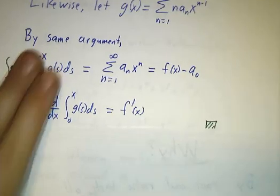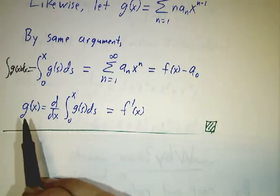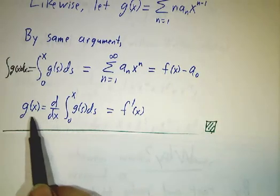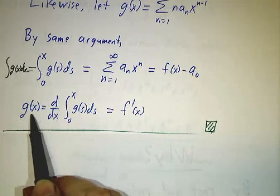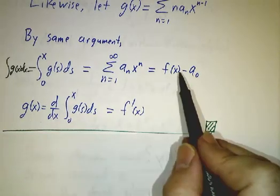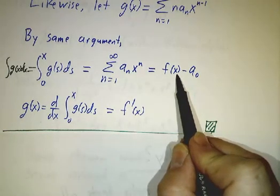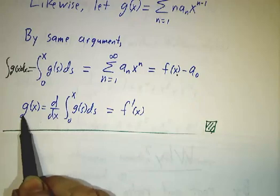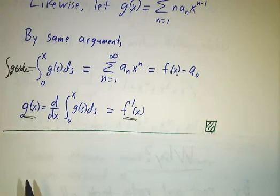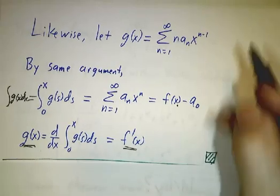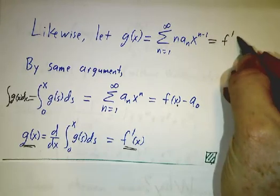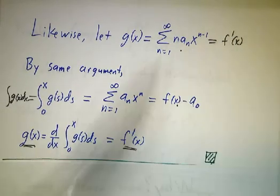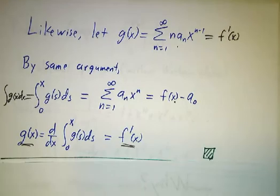Now we take the derivative of both sides. By the fundamental theorem of calculus, the derivative of the integral is the original function. But the derivative of this is f prime. So this expression must be f prime. In other words, f prime of x is given by this formula. So that's it for the theorem.